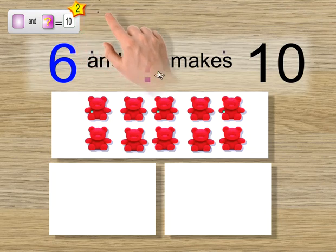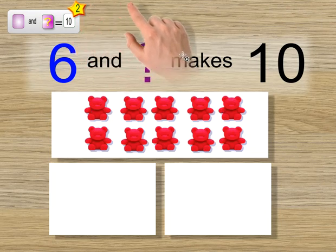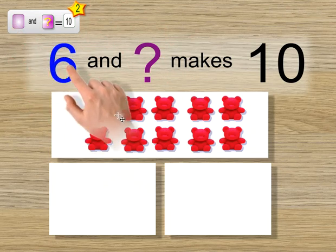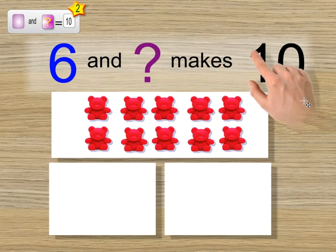Step 2. The addition missing value pathway. I spin the light purple spinner and get 6 as a value. 6 and something makes 10.